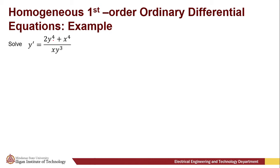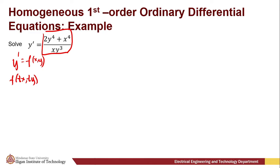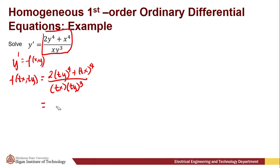The example is y' = (2y⁴ + x⁴) / (xy³). We're going to test if this is a homogeneous differential equation. We can apply f(tx, ty) = (2(ty)⁴ + (tx)⁴) / (tx · (ty)³). Simplifying this expression: